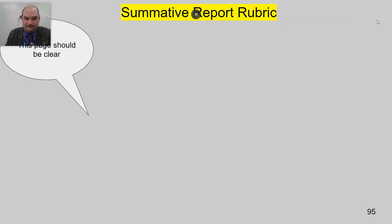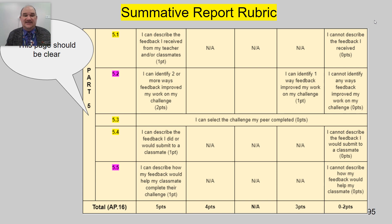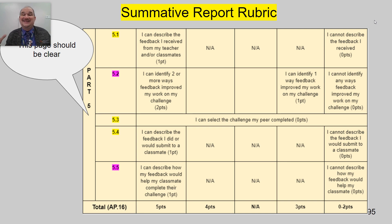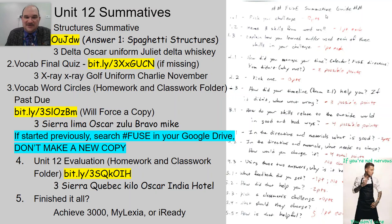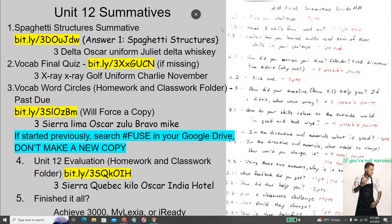On to number five — this page should be clear. I can describe the feedback I received from my teacher and/or classmates. You worked in groups, so you got some feedback — that should be an easy point. I can identify two or more ways the feedback improved my work on the challenge — even if it didn't, discuss what it did for you. I can select the challenge my peer completed — it's spaghetti structures, so again an easy one. I can describe the feedback I did or would submit to a classmate and how that would help them do better. Five total points on that. That is your rubric. If you're not nervous, you don't care, according to Chef Voltaggio — love that guy. Made that meme myself, just for this purpose.